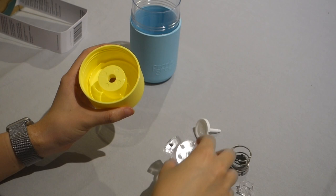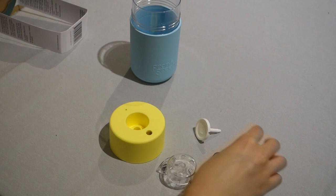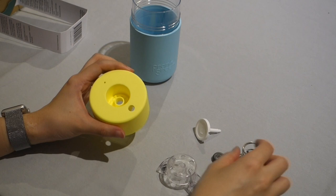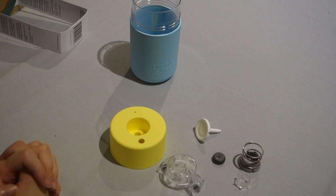So all these components can then be washed separately, and it says it can be dishwasher safe as well. So these are all the components of the lid, and I'm going to show you how to put the lid back together the proper way.